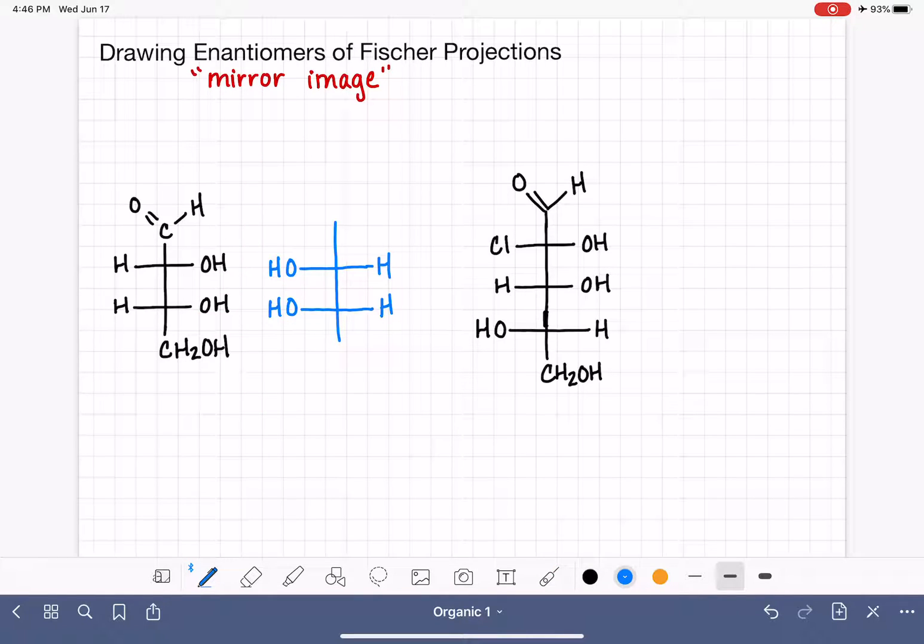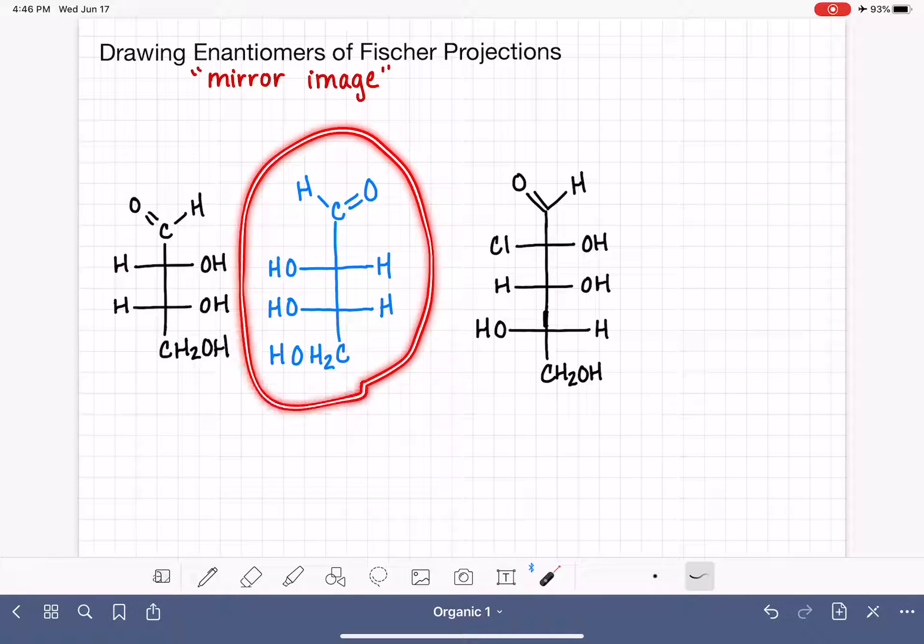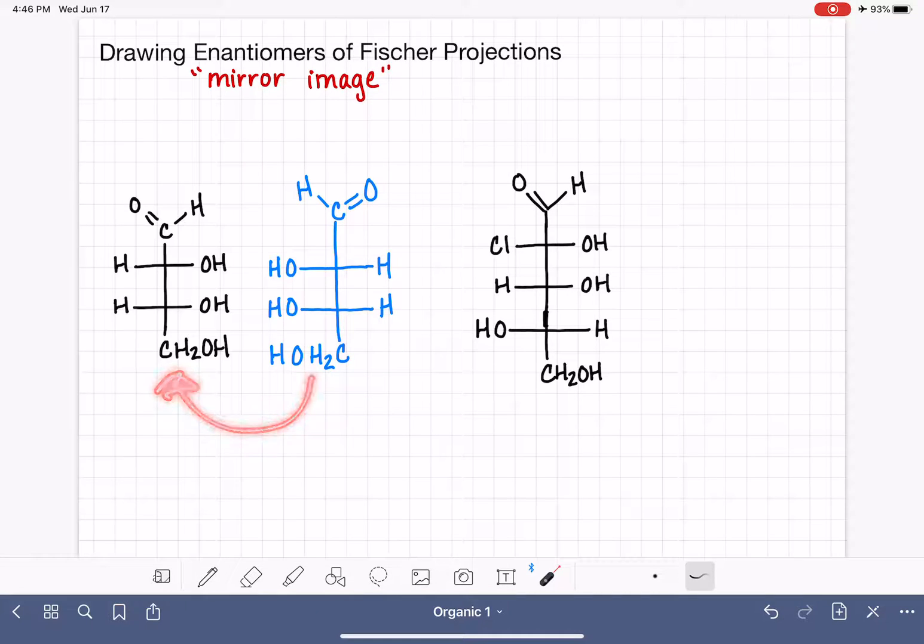As far as the top of the molecule and the bottom of the molecule, for a lot of students, especially initially, it's just a lot easier to also reflect the orientation of those substituents as well. So I've again made a mirror image up here and a mirror image right here. And so here is the enantiomer of our original molecule.